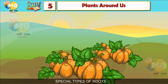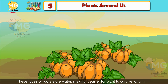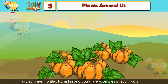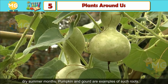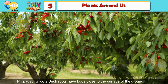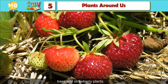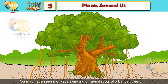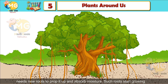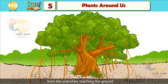Water-storing roots store water, making it easier for plants to survive in dry summer months. Pumpkin and gourd are examples. Propagating roots have buds close to the surface of the ground; these buds can grow into new independent plants, as in cider trees and strawberry plants. Aerial roots, like those seen on the banyan tree, grow from the branches reaching the ground to prop up the tree and absorb moisture.